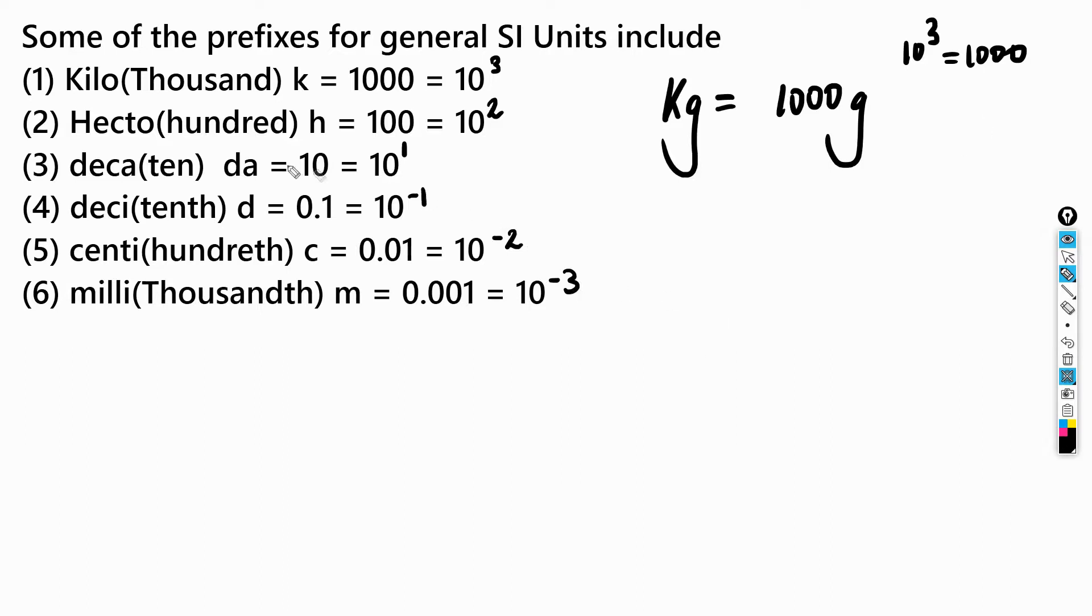Hecto (h) means 100, so hg would be 100 grams. We don't really use hecto often, but it's still important to know. It represents 10². Then we have deca (da), which is a prefix for 10. So dag would be 10 grams, and it represents 10¹.